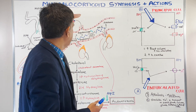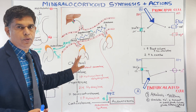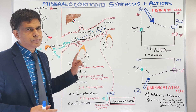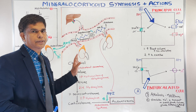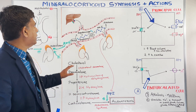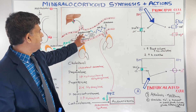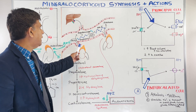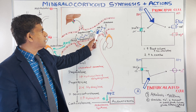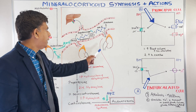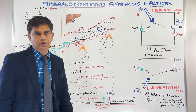To recap: three things stimulate aldosterone (the mineralocorticoid) — ACTH (not as much), angiotensin II, and potassium. For angiotensin II: renin from the juxtaglomerular cells of the kidney acts on angiotensinogen produced in the liver to produce angiotensin I. Angiotensin-converting enzyme then converts angiotensin I into angiotensin II, which acts on aldosterone synthase to convert corticosterone into aldosterone — a major step.